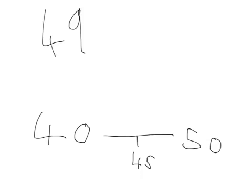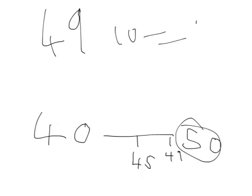So 49 is definitely over 45 — it would be about here. So that means you round up to 50. So 49 rounded to the nearest 10 equals 50.